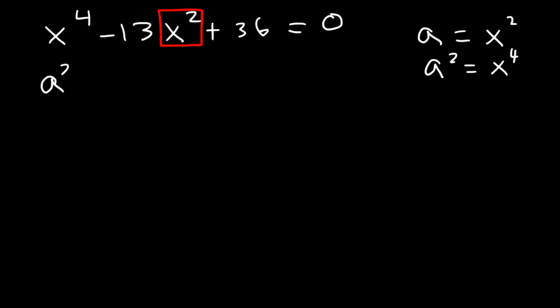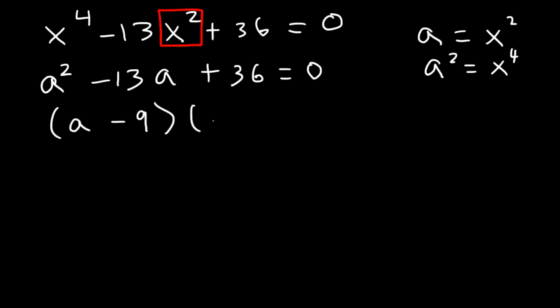This is equivalent to a squared minus 13a plus 36, which we can factor. Two numbers that multiply to 36 but add to negative 13 are negative 9 and negative 4. So therefore, we can see that a is equal to 9 and a is equal to 4.